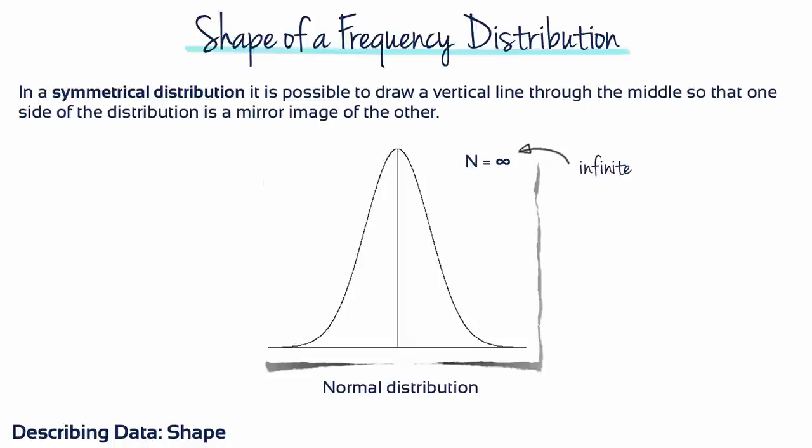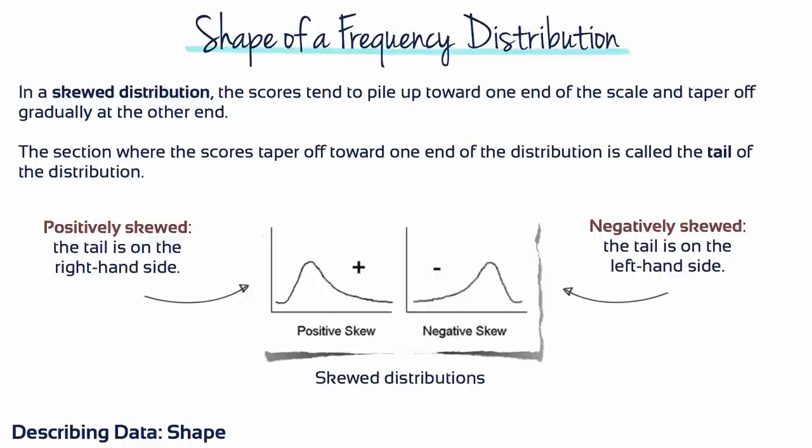In a symmetrical distribution, it's possible to draw a vertical line through the middle so that half of all scores fall above the line and half fall below. Unlike the normal distribution, which is symmetrical, skewed data have an ever-thinning tail in one direction or the other. So a skewed distribution is a distribution in which one of the tails is pulled away from the center.